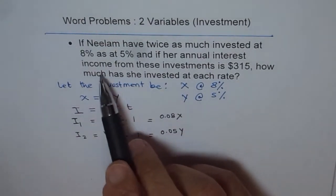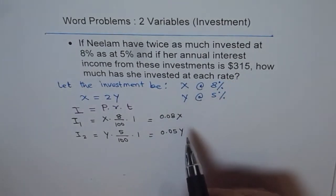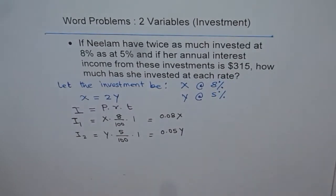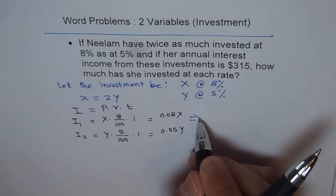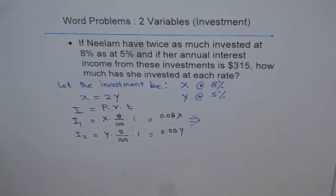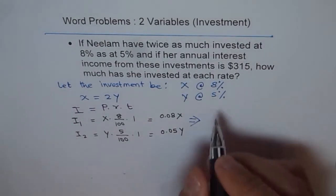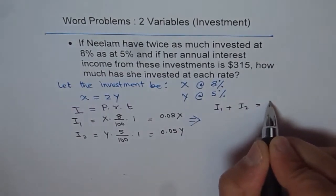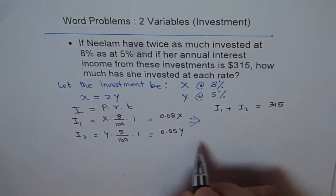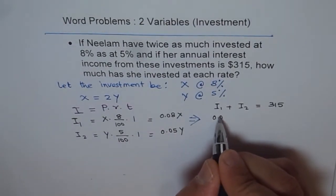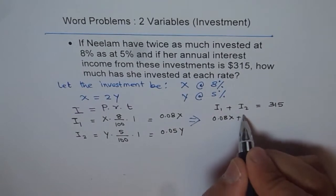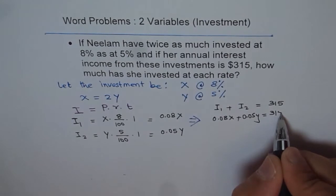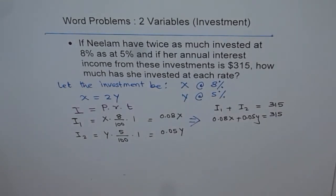Now, it says that total income is 315. That means if you combine these two, you get $315. The next step for us is, we will add the two incomes. When you add these two incomes, income 1 plus income 2 is equal to 315. How much is income 1? Income 1 is 0.08 of X and income 2 is 0.05 of Y and this is equal to 315.